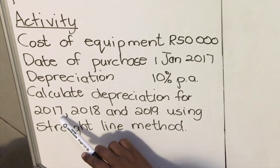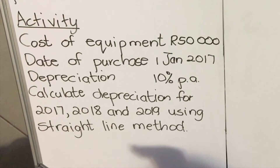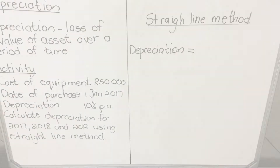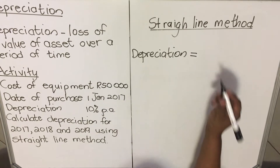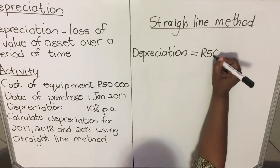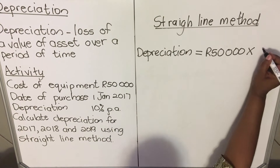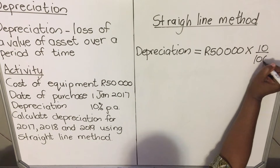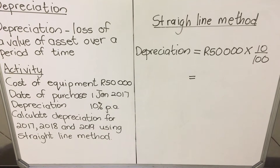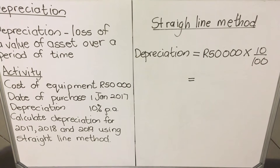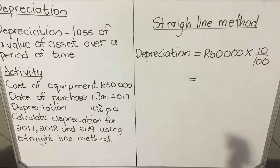The question asks us to calculate depreciation for 2017, the whole year 2018, and 2019 using the straight-line method. With the straight-line method, we take the original value — here it's fifty thousand — and multiply by the rate, which is 10 percent, written as ten over one hundred. This is for the year 2017, the first year.